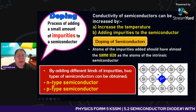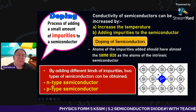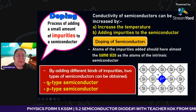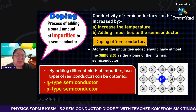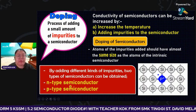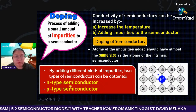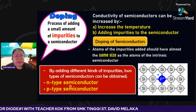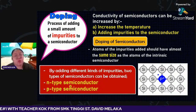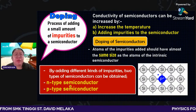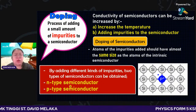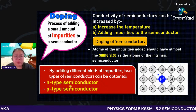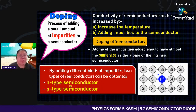When we add the impurity, they can create two types of semiconductor. First, we call it N-type — N stands for negative. Second is P-type — P stands for positive. So when you add the impurity, they create two types of semiconductor. Let's go one by one.